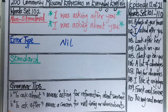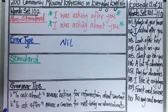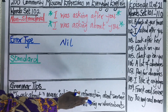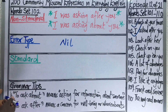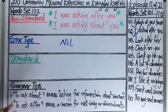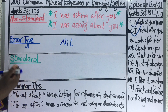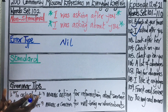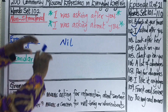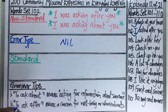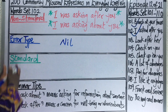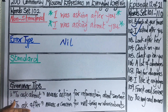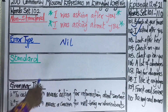To ask about means asking for information about someone, while to ask after means a concern for someone's well-being or whereabouts. So when you tell someone you were asking after them, you are indirectly expressing concern about their whereabouts or well-being. When you tell someone you were asking about them, you are saying you were seeking information about them.